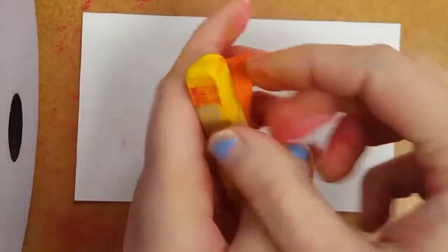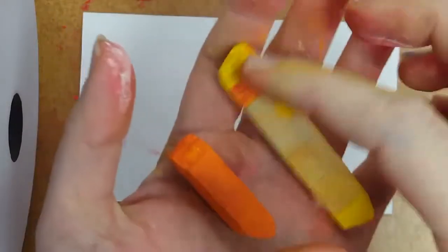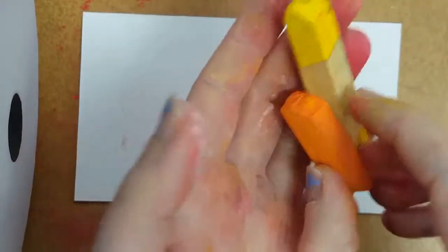All right guys, analogous colors in chalk pastel. First thing before you get started, please do choose two colors that are analogous to one another. So right now I have orange and yellow. These two are side by side on the color wheel. Yellow goes into creating orange, I know that I'm good.